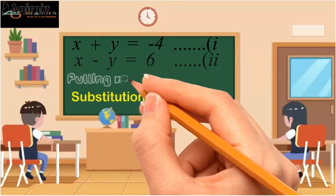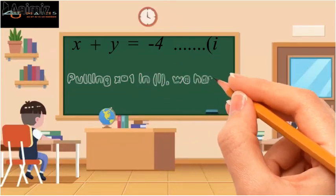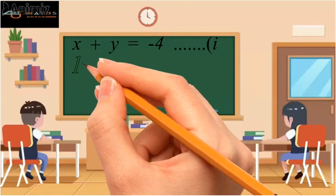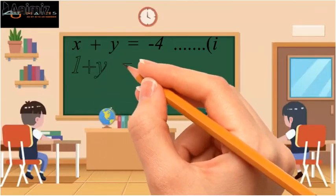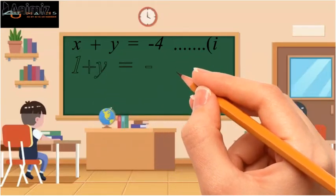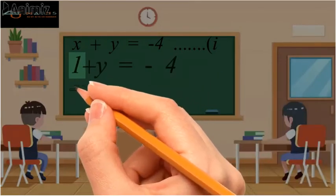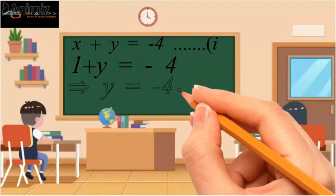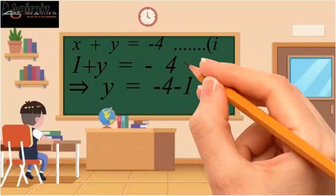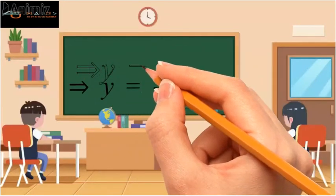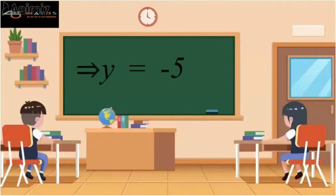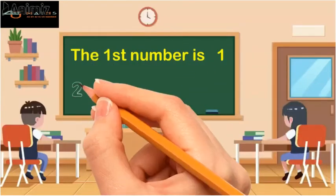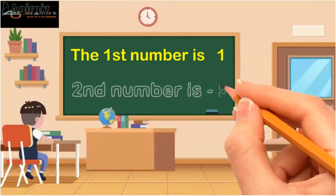So putting this value in equation 1, which gives 1 plus y equal to minus 4. Now transferring 1 from the left-hand side to the right-hand side, it gives y equal to minus 4 minus 1, which gives y equal to minus 5. Hence the required numbers are x equal to 1 and y equal to minus 5.